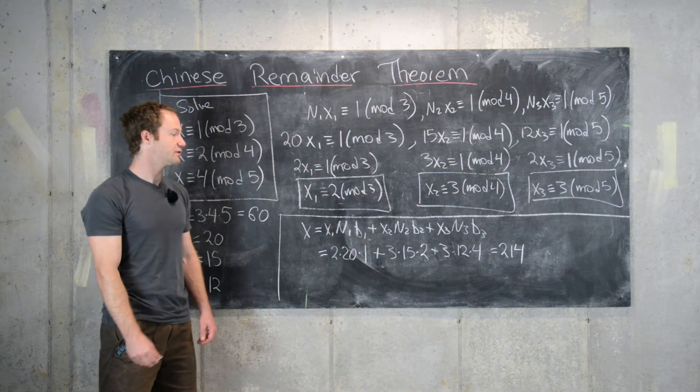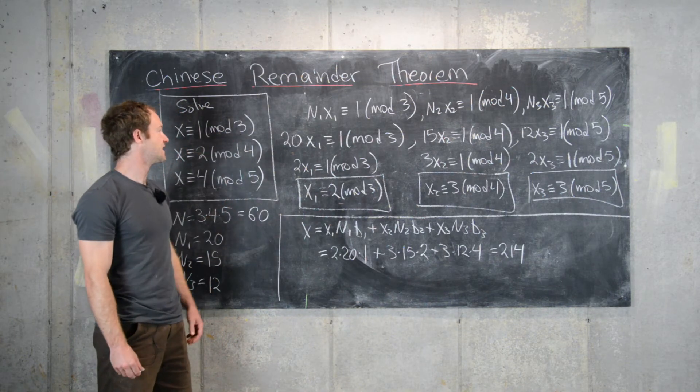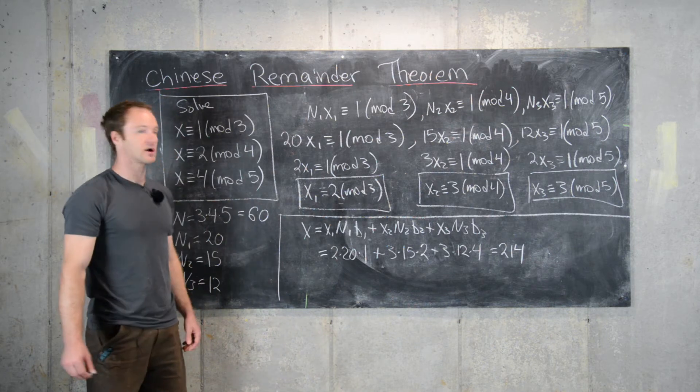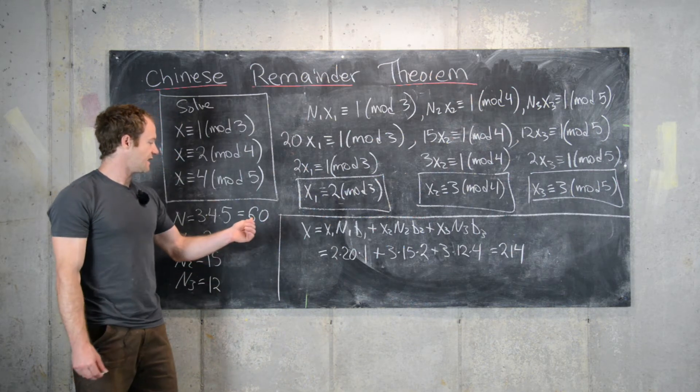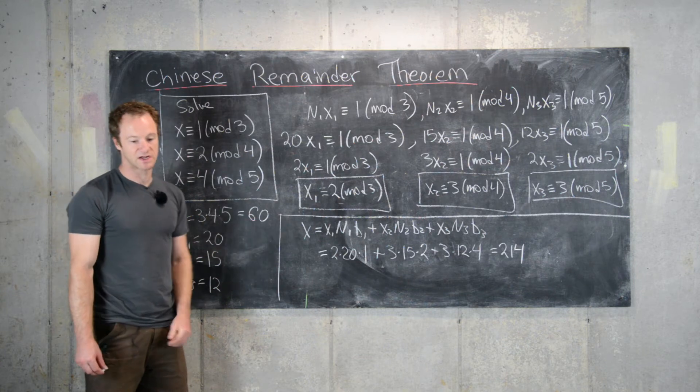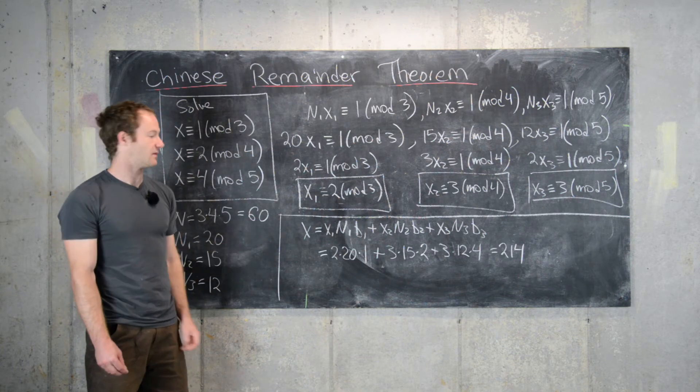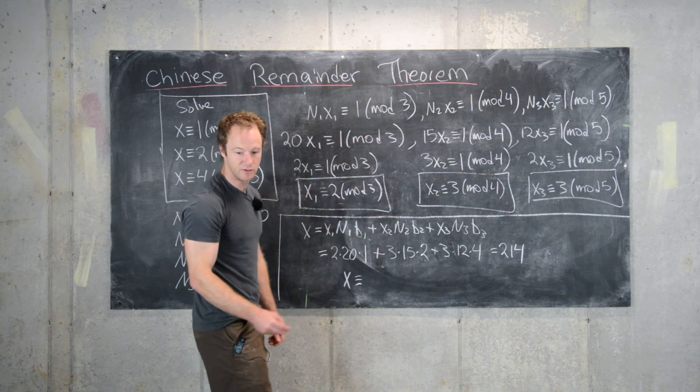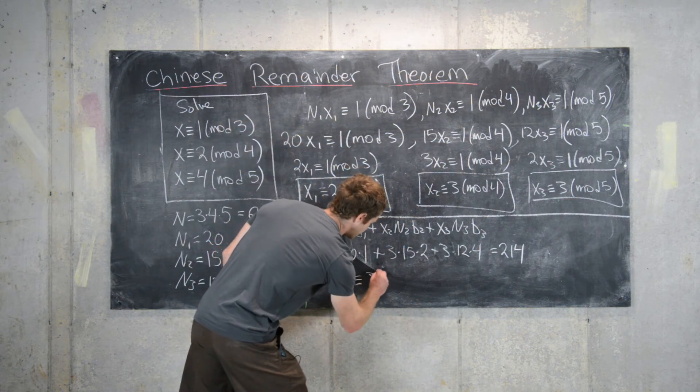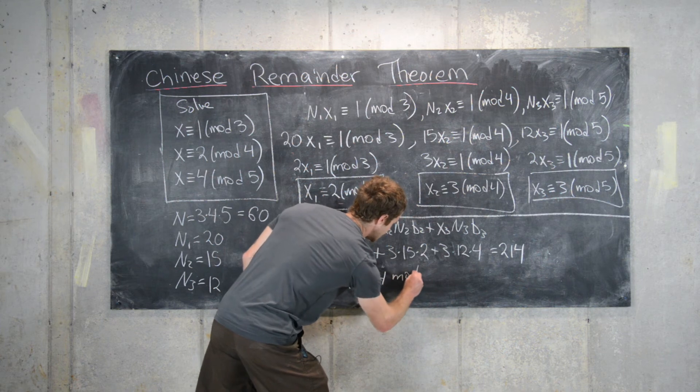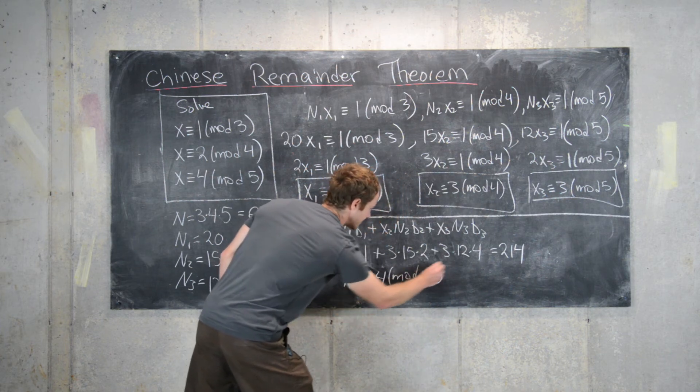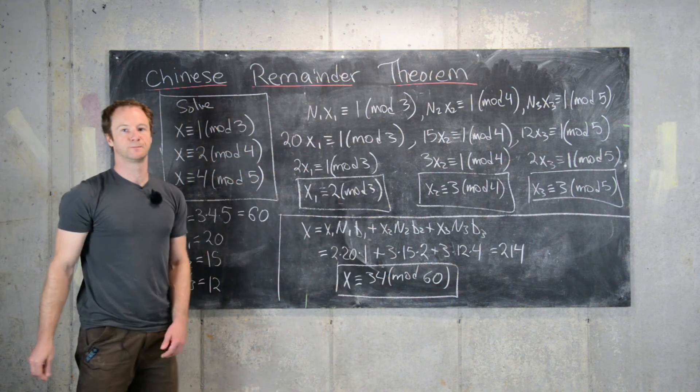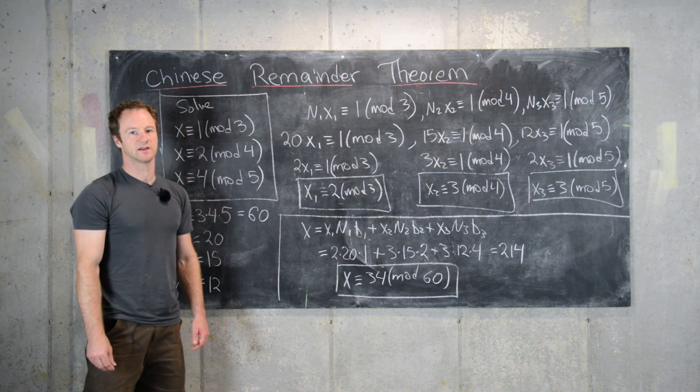So that means 214 will be a solution to the system of linear congruences, but we know that our solution should be unique modulo 60. So we can take this mod 60. That means x is congruent to 34 mod 60. That is our unique solution, and that's the end of the example.